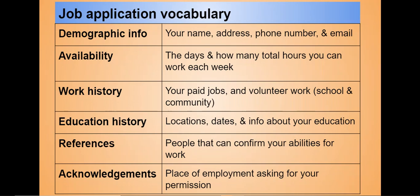Your work history includes the previous jobs you've had — those could be paid jobs and can also include volunteer work. Education history includes the location, dates, and information about your education; since you're still in high school, that means the high school you're in now. References are people that can confirm your abilities for work — a manager, a coach, a teacher, or a counselor. Acknowledgements is the part of the application where the employer asks for your permission to review your work information and check your references.